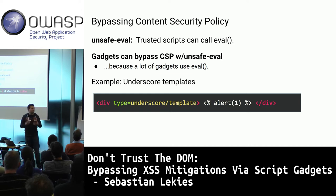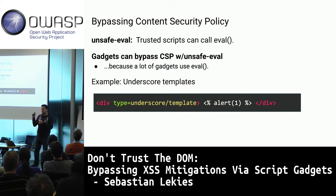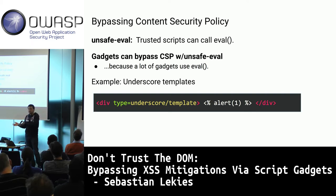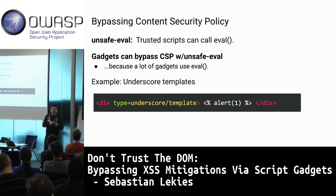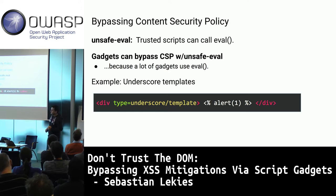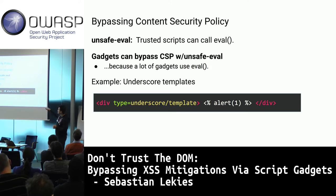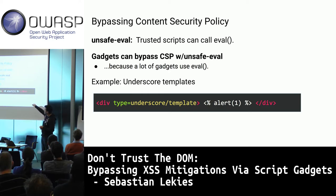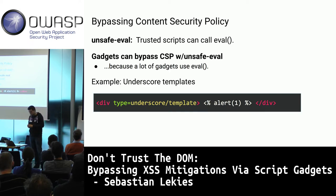Unsafe-eval is interesting because people thought it wasn't very dangerous — you only use eval in one or two places, audit those, and you're safe. But with script gadgets you might have a chain from the DOM into eval. For example, the Underscore templating library uses a syntax like '<%' for templates, which gets automatically evaluated in the DOM. You can simply have a div tag and Underscore will execute code for you — bypassing unsafe-eval.